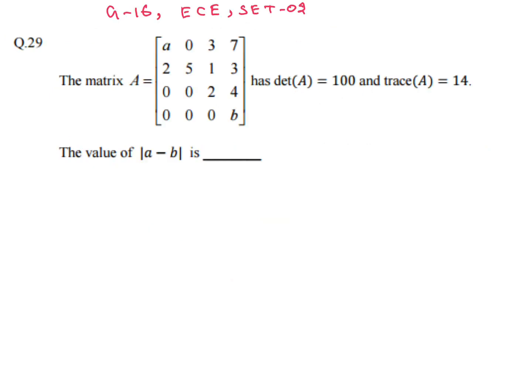A matrix A is given with determinant value 100 and trace of A equal to 14. We need to calculate the value of |a − b|. Trace is the sum of diagonal elements, so a + 5 + 2 + b = 14, giving a + b = 7.